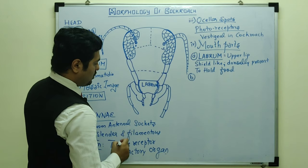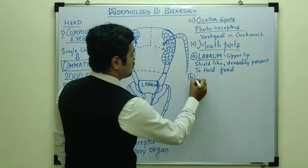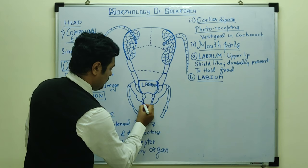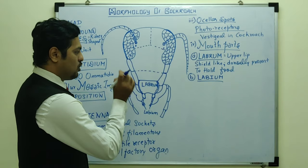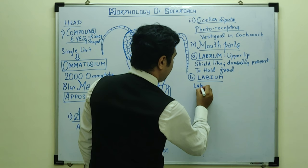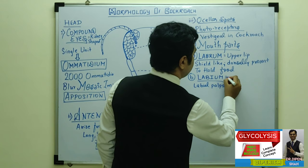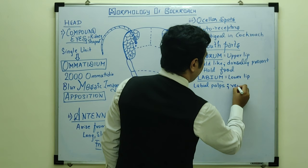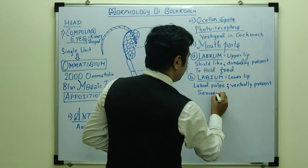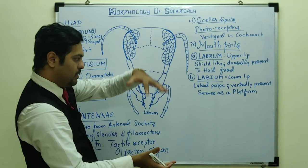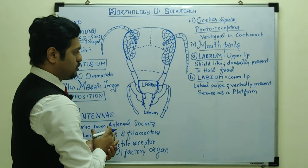The second structure is the labium, which is the lower lip of the cockroach. It is present on the ventral surface. It has extensions called labial palps. The labium acts as a platform to hold the food, and food will be pushed further from here.